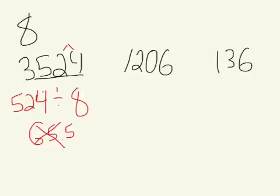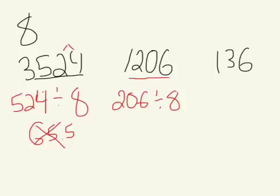Let's try 1,206. To see if 8 evenly divides into it, we look at the last 3 digits and say 206 divided by 8. If you punch that into a calculator, it comes out to 25.75. Since that doesn't divide evenly, we know that 1,206 is not evenly divisible by 8.